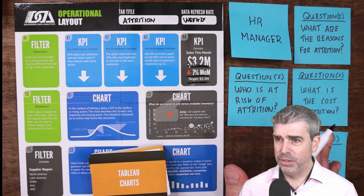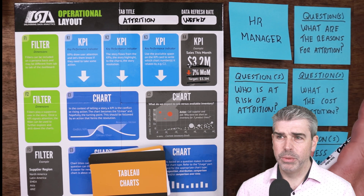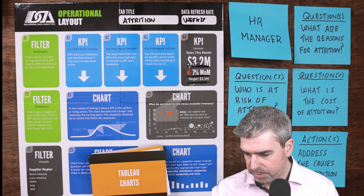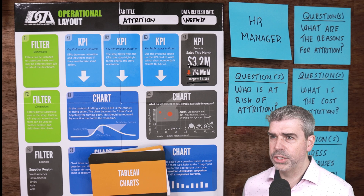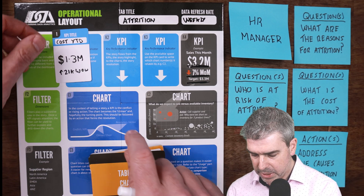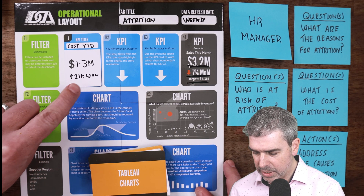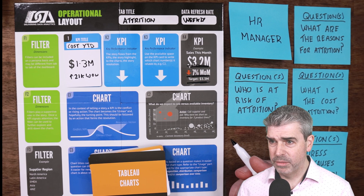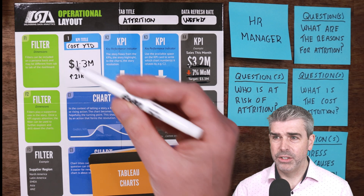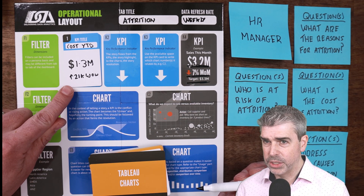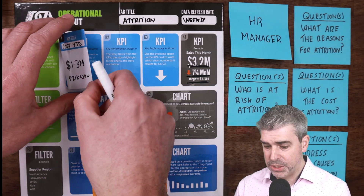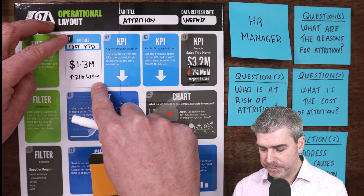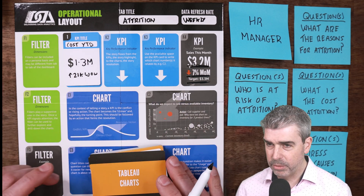Having a conversation with the end user, we understand their questions, so we should have KPIs that relate to those business questions. Starting with cost — there's a question for 'what is the cost of attrition?' — so let's drop in a KPI for the cost. Sometimes you have to further qualify these: cost over what time? We went with week-on-week change, but it's the overall cost year-to-date. If the end user can comment on when this KPI should change color, we can document that here as well — for example, when it goes over 2 million, we want to make it red to highlight it.